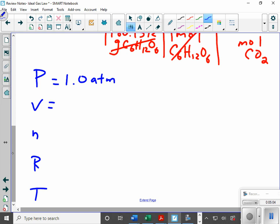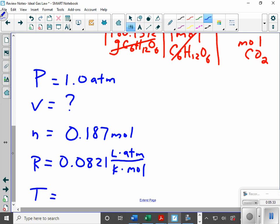My volume, that is what I'm trying to find. My moles I just calculated, that was 0.187 moles of carbon dioxide. My gas constant is the one that had atmospheres. So it's 0.0821. And finally, my temperature. My temperature was 37 degrees Celsius. I've got to convert that to Kelvin. So I add 273.15, and that gives me 310.15 Kelvin. So I've collected all my data.